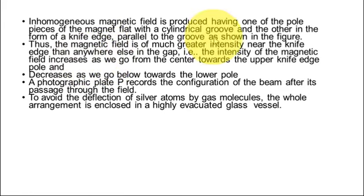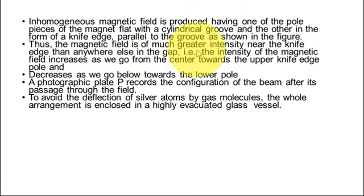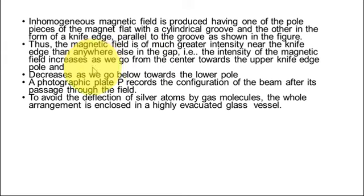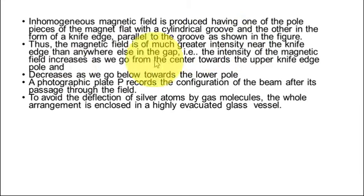The south pole has a knife edge, so the magnetic field is of much greater intensity near it. Concentrate on this point: why is the magnetic field of greater intensity near the knife edge? Because of the shape — it is an inhomogeneous magnetic field. Towards the sharp end of the pole, the magnetic lines of force are more concentrated, so the intensity of the magnetic field near the sharp knife edge is greater than anywhere else in the gap between the north and south poles.